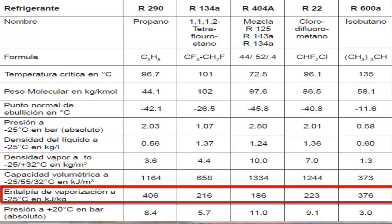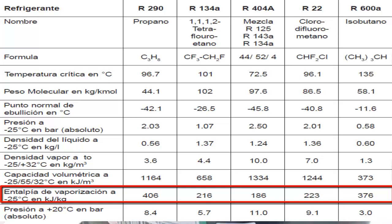In contrast, R290 is less dense, which means that much less quantity of R290 grams will flow through the compressor. However, each gram of R290 has greater cooling power, compensating for its lower density. A compressor with R290 handles fewer grams of this gas, but each of these grams has a greater cooling power than a gram of R22.